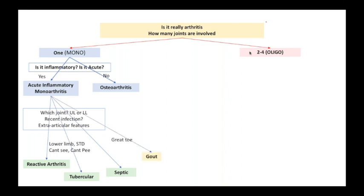If you specifically find that the lower limb and the great toe of the person is involved, you do definitely start thinking of gout.